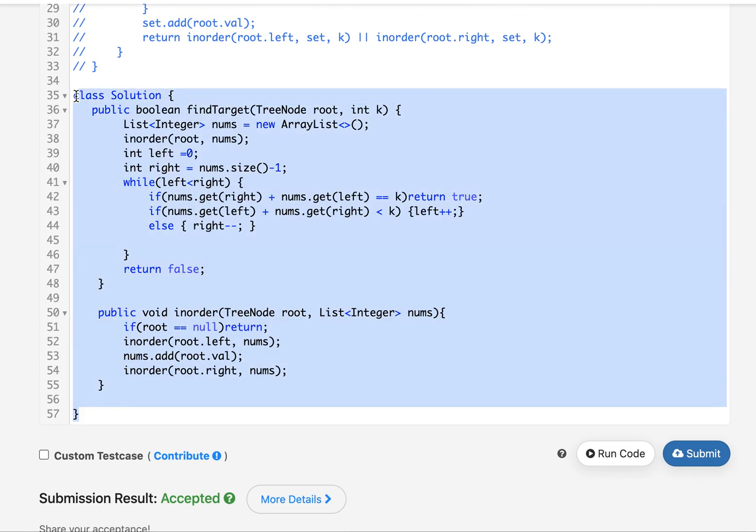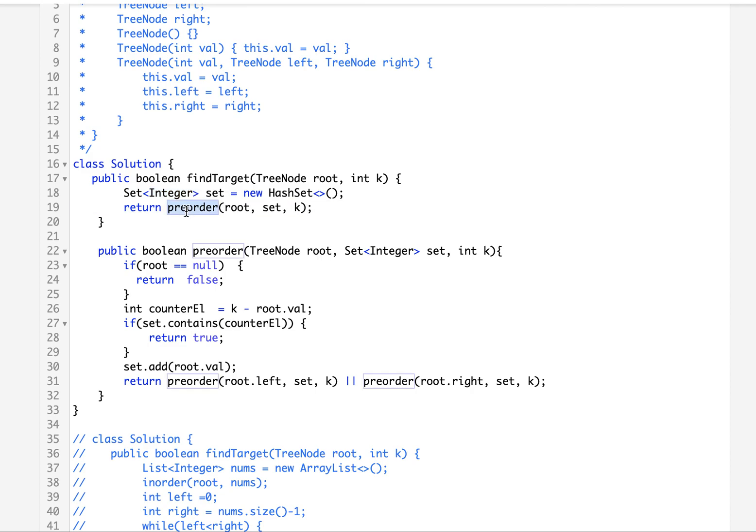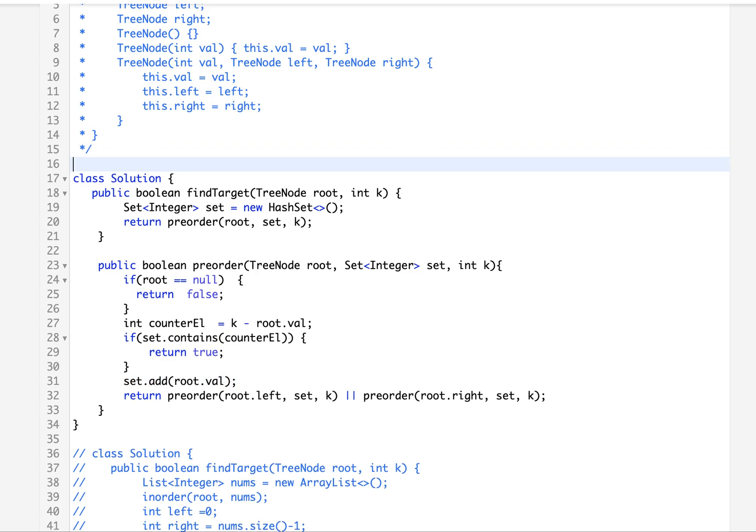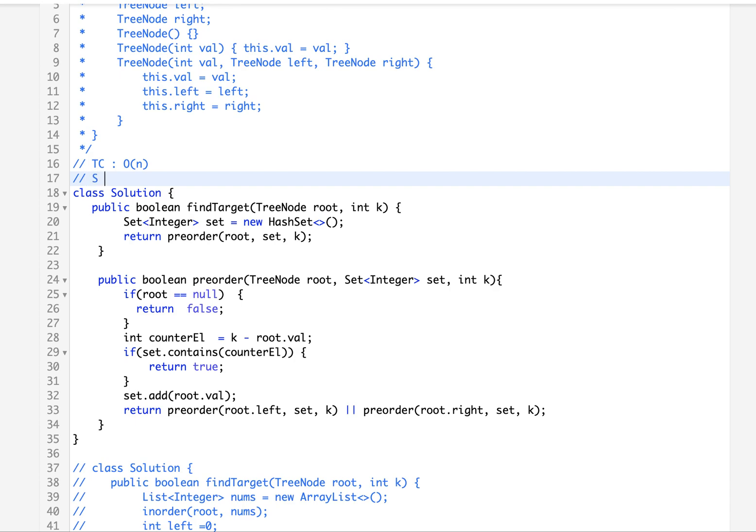Accepted. Now let's see the other solution. You set and perform pre-order traversal on the set. If my root happens to be null, I return false. Otherwise, I calculate the counter element that I need to search in the tree. If set contains a counter element, I return true. Otherwise, I go and add that root element into the set and perform the pre-order traversal on its left child and its right child. Pretty straightforward. The time complexity for both these approaches is order of n, and space complexity again is order of n.